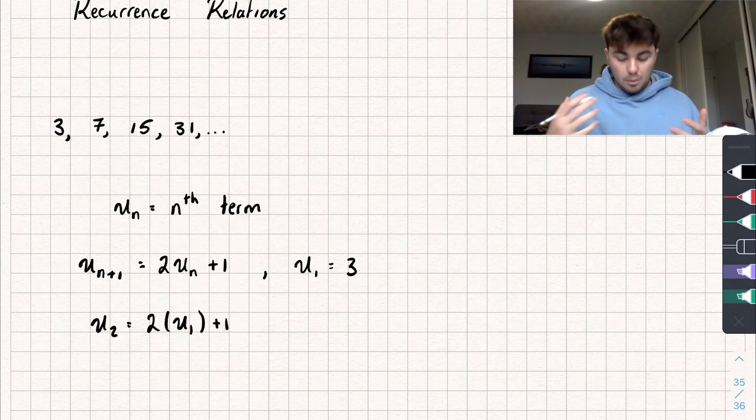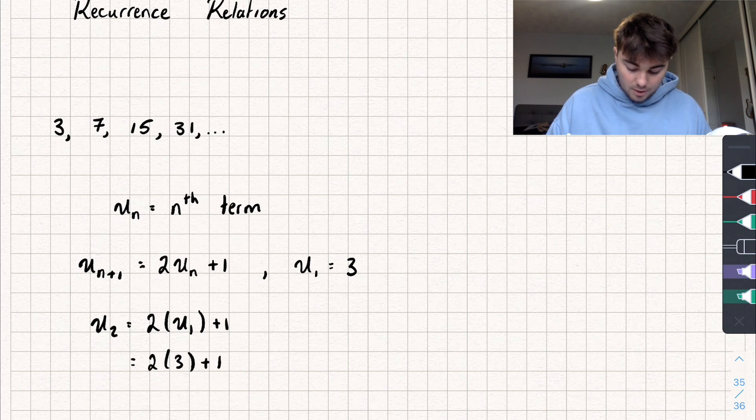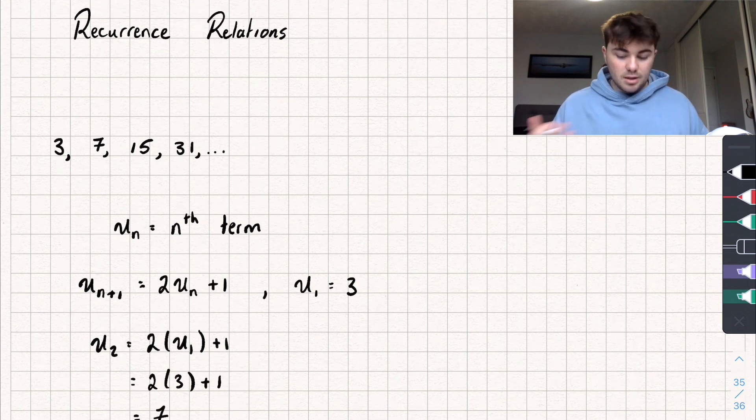And we were given that u_1 was three. So the second term is going to be two multiplied by three plus one, which gives seven. And that is correct because we can still see the original sequence.